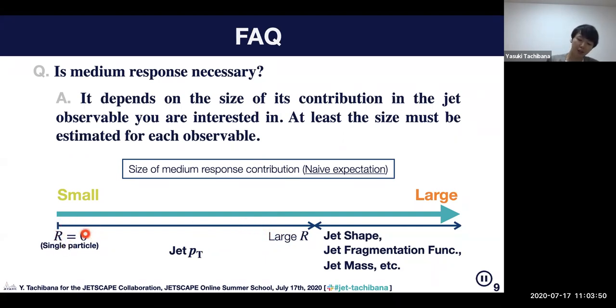But if you have very small jet cone sizes, the core region of the jet is where very hard particles dominate. In this limit, we expect that medium response effects can be very small.